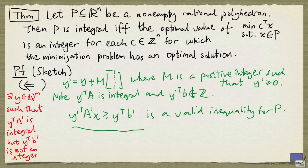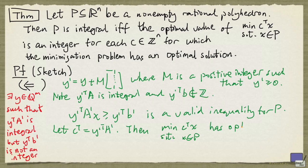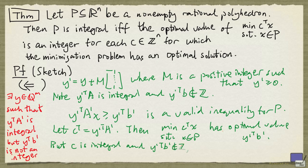So if we let c transpose be y' transpose A', then the problem of minimizing c transpose x subject to x in p has optimal value y' transpose b'. But c is integral and y' transpose b' is not an integer. The result now follows.